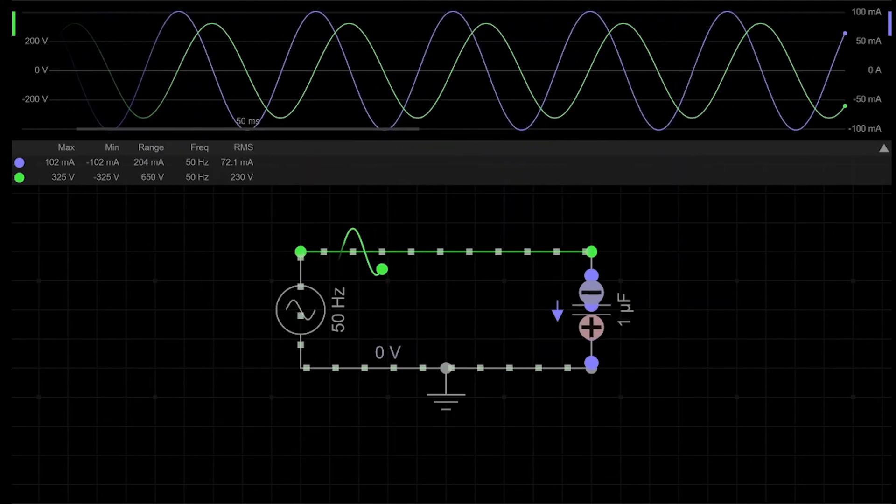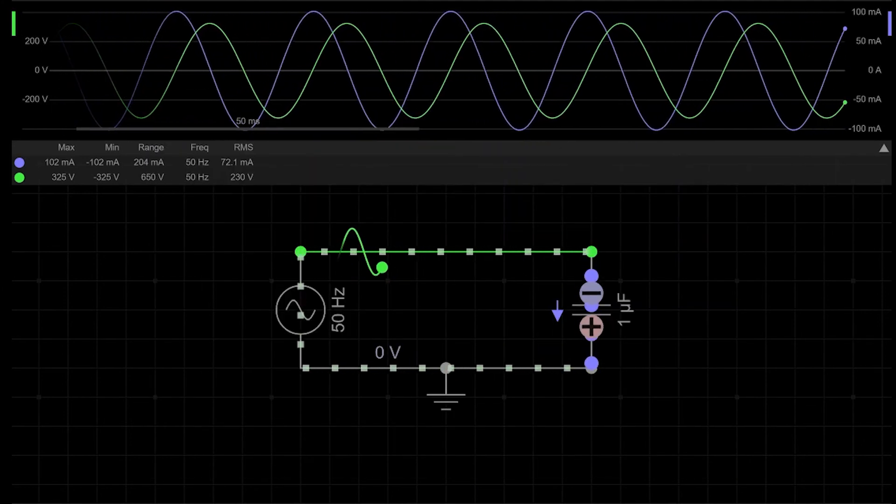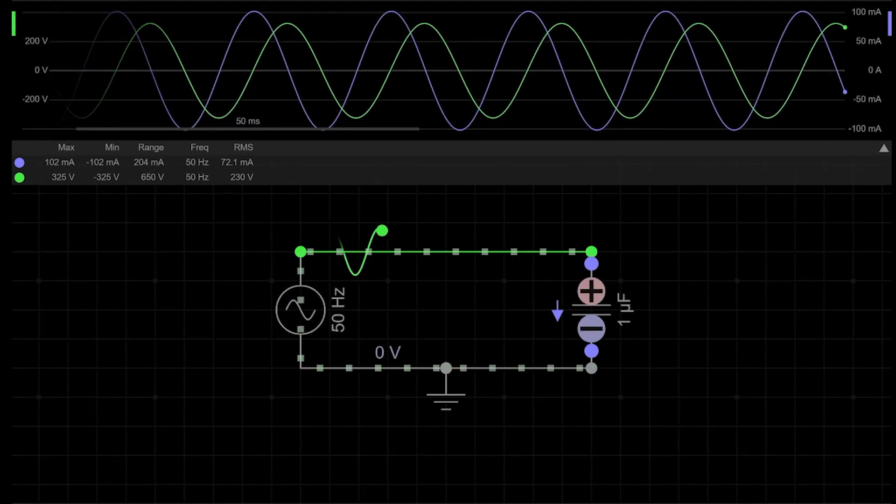When we apply AC voltage to a capacitor, voltage across its plates lags for a quarter period, or 90 degrees of sinusoidal signal, relative to current. But why is this happening? The simple answer is in the physics processes that occur in a capacitor when you apply voltage.